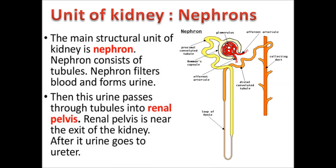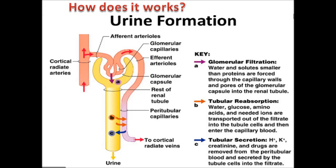How does the nephron work? It is divided into three steps: glomerular filtration, tubular reabsorption and tubular secretion. Firstly, the intoxicated blood enters the cortical radiate arteries. The impure blood surpasses the efferent arteriole and enters the Bowman's capsule or glomerular capillaries. Through the glomerular capillaries, the broad artery is subdivided into tiny vessels. The impure blood undergoes osmosis through the selectively permeable membrane, where impurities are absorbed into the Bowman's capsule.